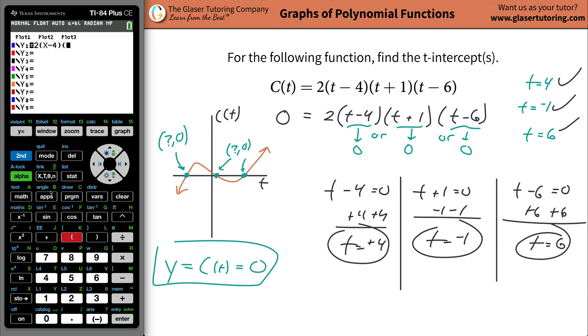T minus four, close parentheses, open parentheses, X plus one, and then open the parentheses again, and it's going to be X minus six. Now you can hit graph if you like, and there's the function.